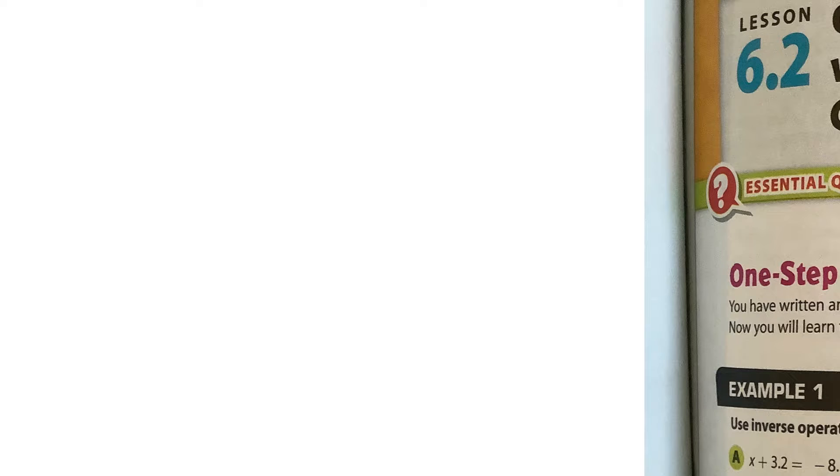Let's say I have 8 minus 5. That obviously is equal to 3. Now, this is an equation. It has an equal sign here. What I can do is I can play around with this. This is 8 minus 5. The operation here is subtraction.